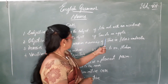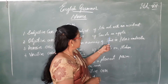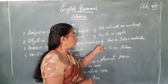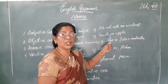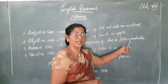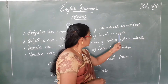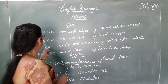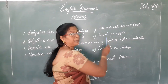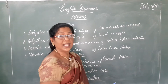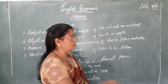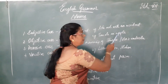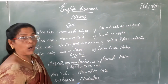Let's see the second sentence: 'Tom ate an apple.' What did Tom eat? Tom ate an apple. So, the noun apple is in the objective case. Apple is the object of the subject.